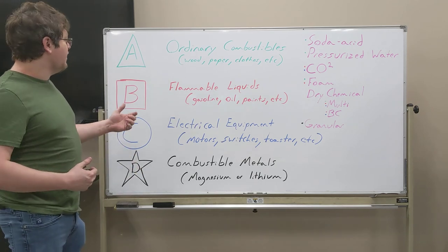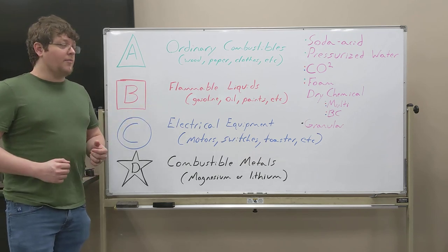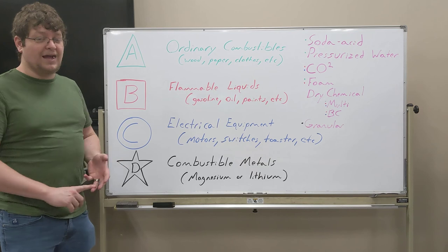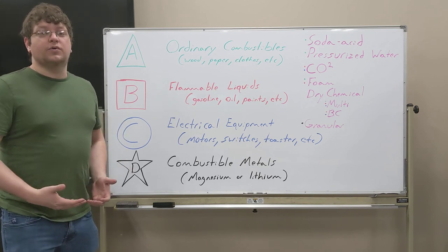The next one on top of that is category B. This is your flammable combustibles or your liquid stuff like gasoline, oil, paints. These are things that when they catch on fire, they take to it quickly.